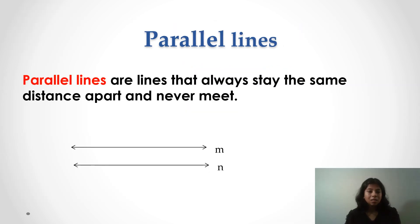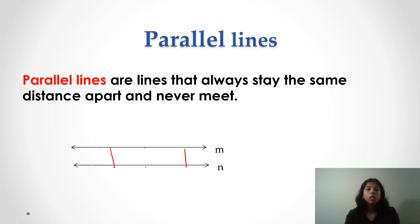Parallel lines are lines that always stay the same distance apart and never meet. Suppose there are two lines M and N. These two lines are at the same distance apart — the distance between any two corresponding points is always equal. They never meet, meaning if we extend these lines they will never intersect each other.